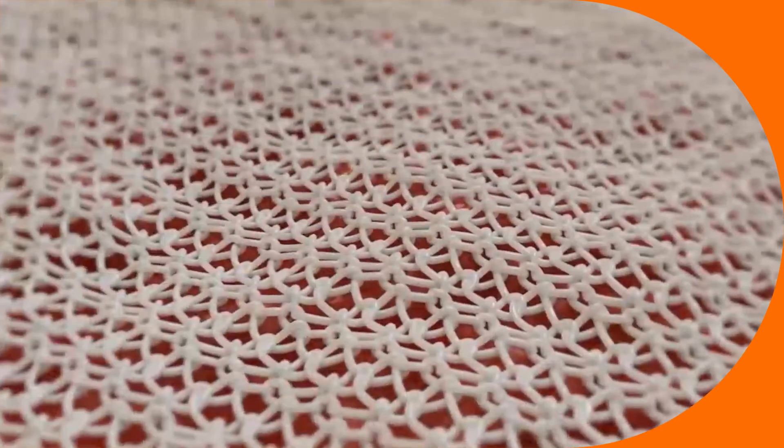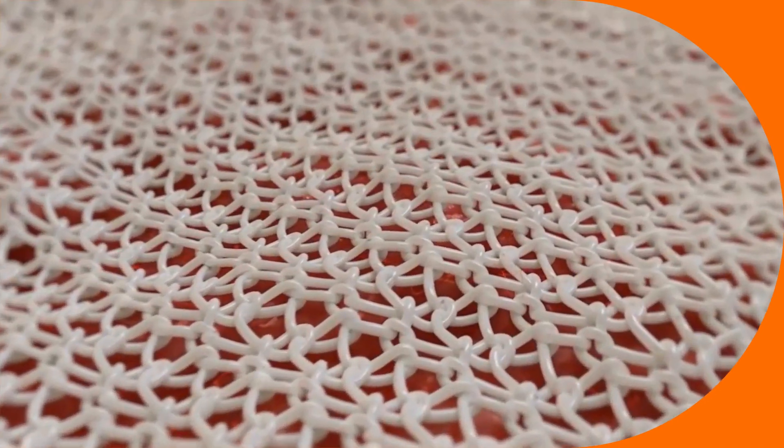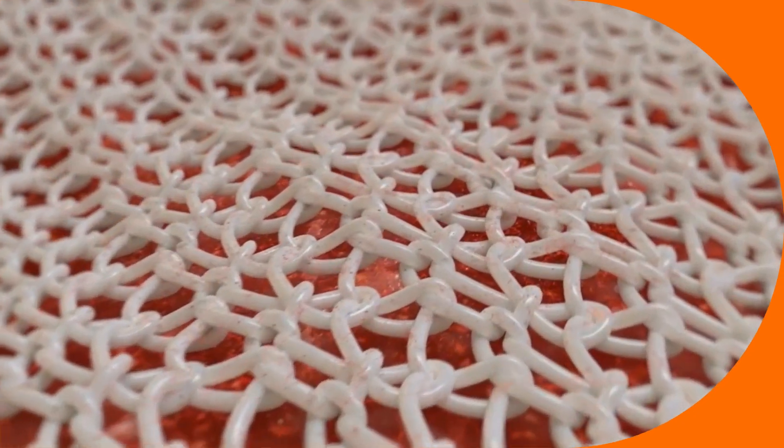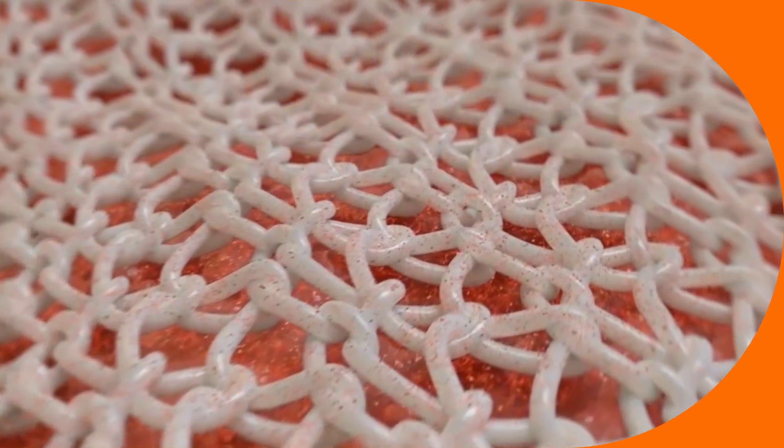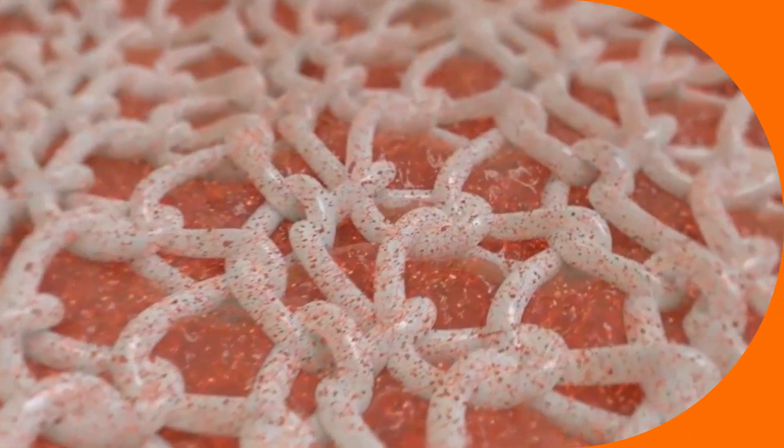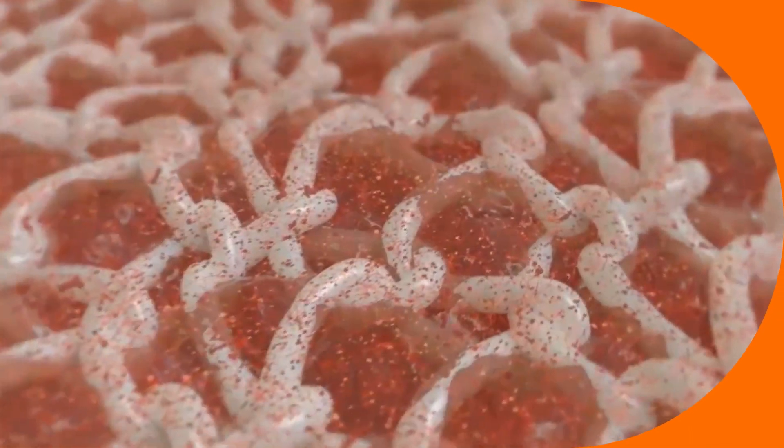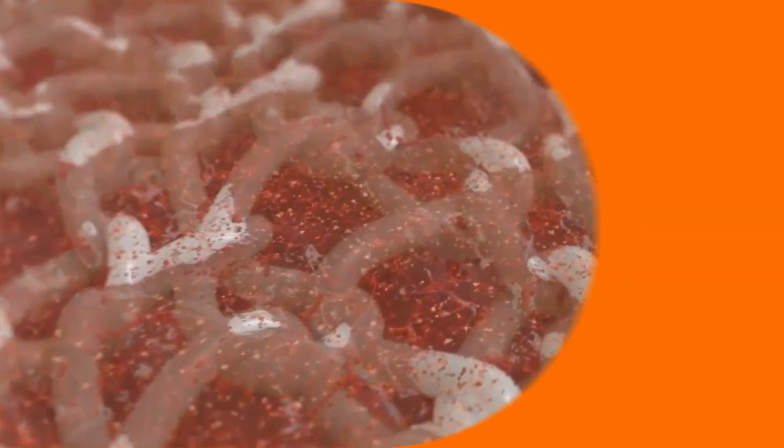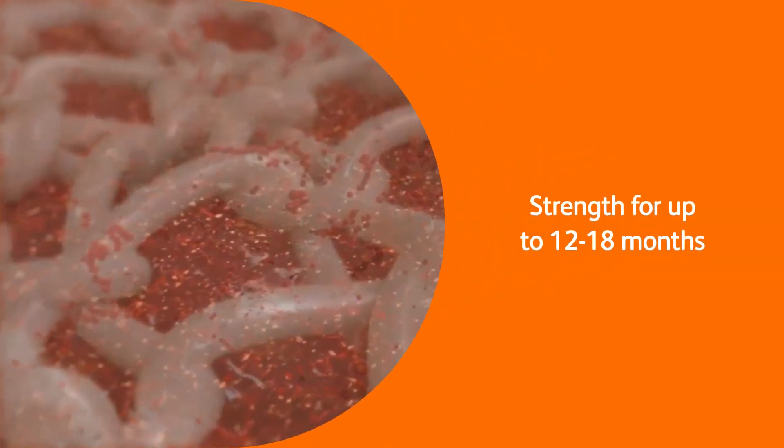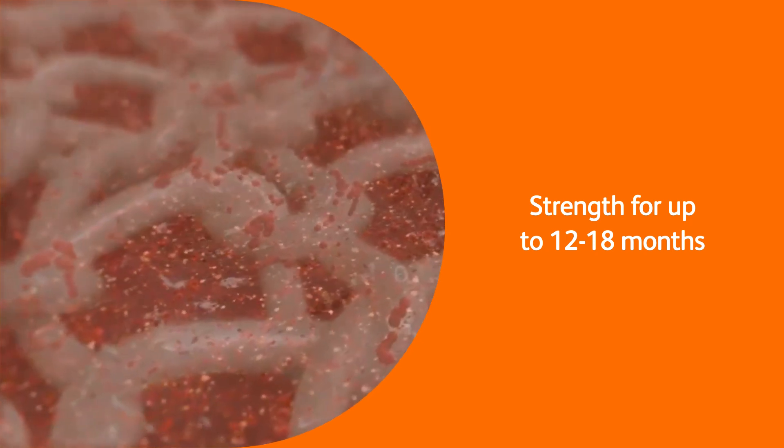Similar to polypropylene mesh, the open porous monofilament structure allows host cells to quickly incorporate the scaffold into surrounding tissue once the Phasix scaffold is implanted. As the Phasix scaffold slowly and predictably resorbs, the material provides strength to support the repair site for up to 12 to 18 months as demonstrated in a porcine model.